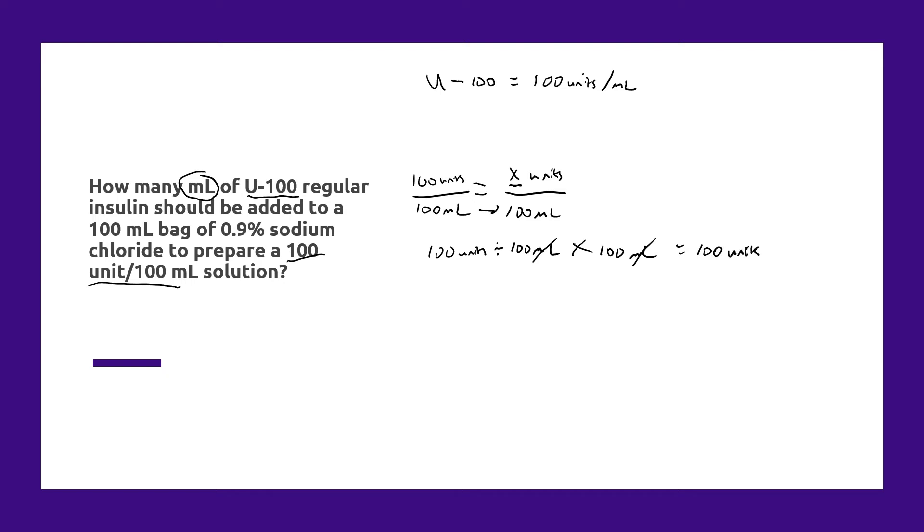Now you may be thinking that was obvious by looking at the question, but I like to show you the actual math so that you can do this if you were provided with different information. So if we know we need to add 100 units of insulin to this product, our concentration is 100 units per mL, we need to convert 100 units to milliliters.